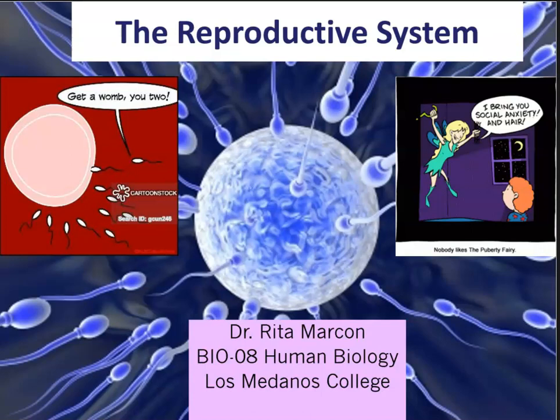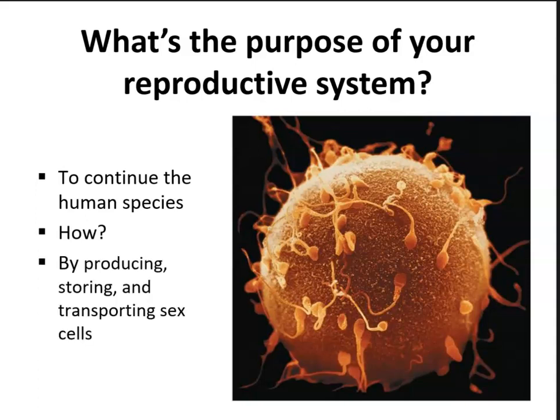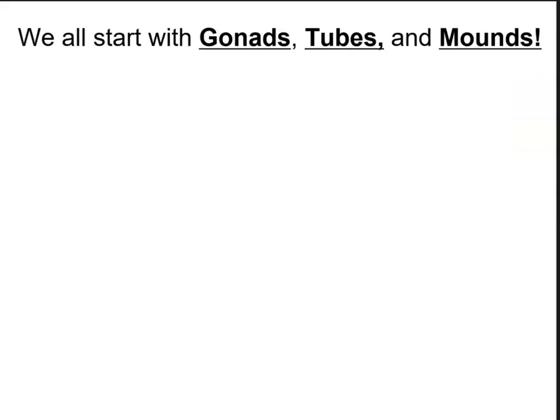Now we get into the reproductive system. What is the purpose of our reproductive system? Of course, it's to continue the human species, and it does this by producing, storing, and transporting our sex cells. Reproductive system development begins soon after fertilization. The formation of organs, or organogenesis, usually begins around week 8 of gestation. All developing fetuses start with gonads, tubes, and mounds.